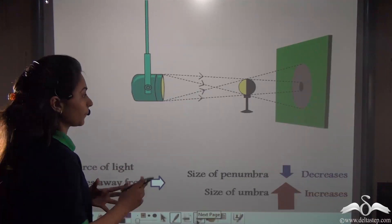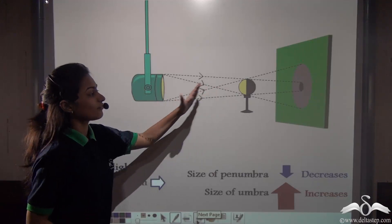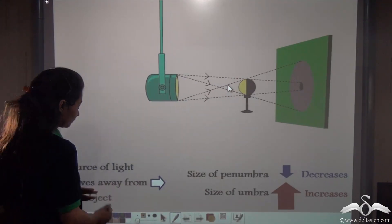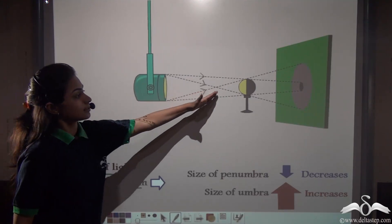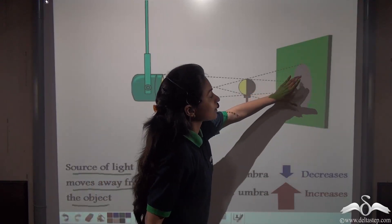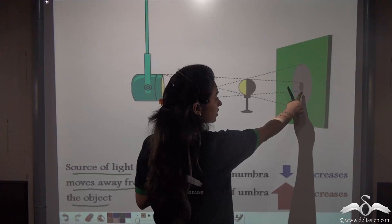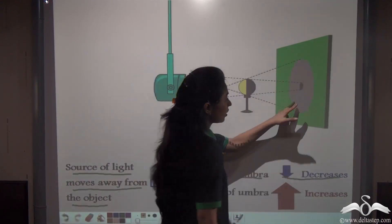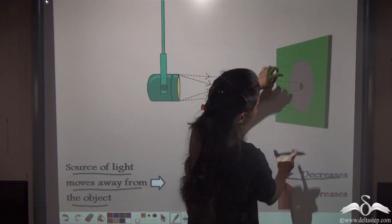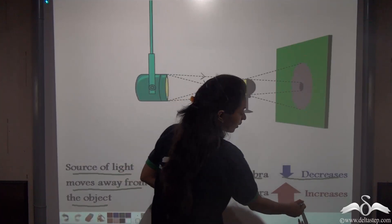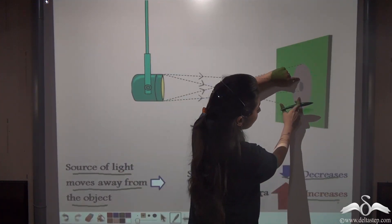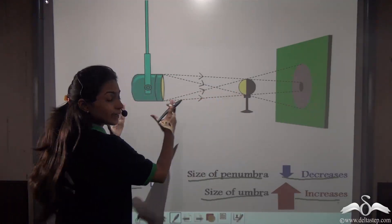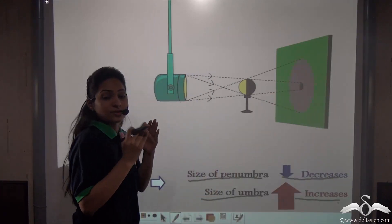Now we do the opposite. We are taking the source of light away from the object, increasing the distance between the source of light and the object. You can see that the overall shadow is decreasing in size. Looking at the two regions: the size of the penumbra decreases — see how the penumbra is decreasing — and the size of the umbra increases. So whenever the distance between the source of light and the object increases, the size of the umbra increases but the size of the penumbra decreases.